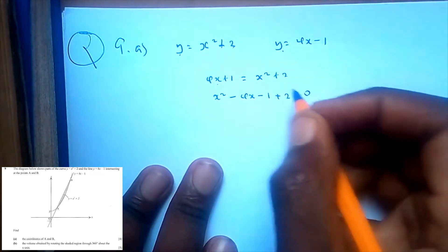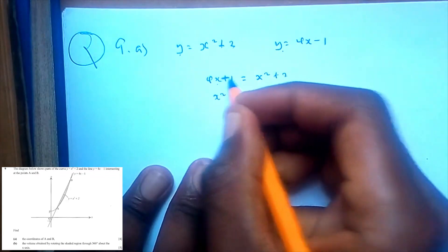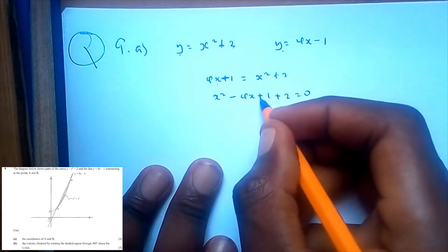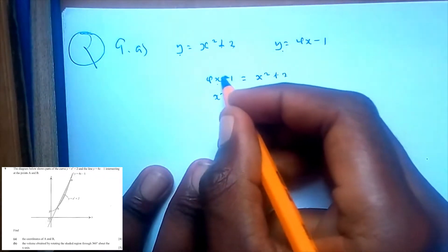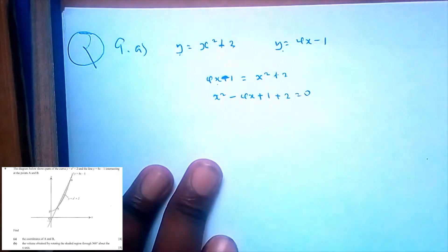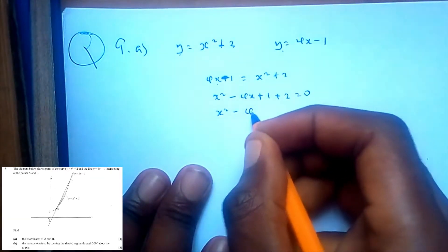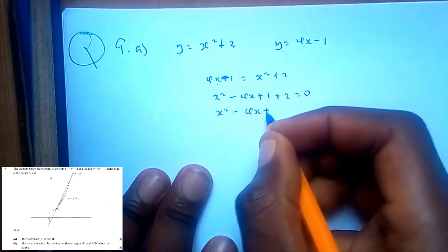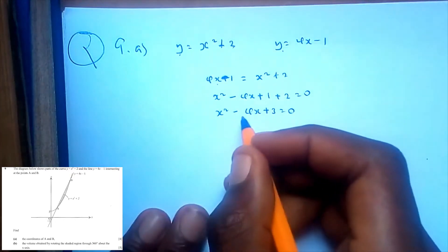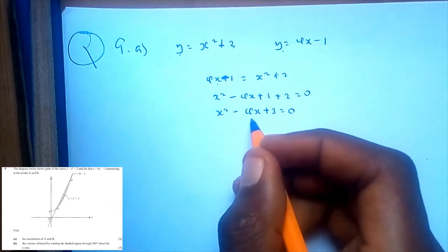This is minus. So when it comes to this side, it will be plus. This is going to be x squared minus 4x plus 3 is equal to 0. What can you add and get negative 4, but when you multiply, you get 3?